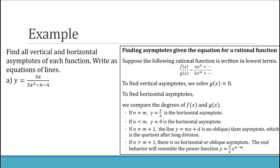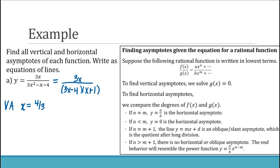Factoring the denominator gives (3x minus 4)(x plus 1). The numerator is already factored. Setting the denominator equal to zero gives x equals four-thirds and x equals negative 1 as the vertical asymptotes.